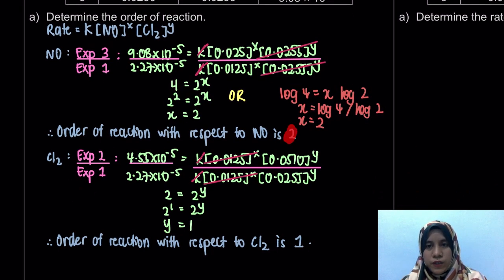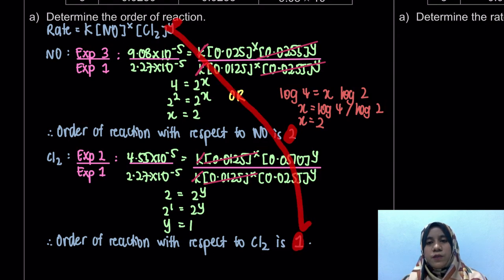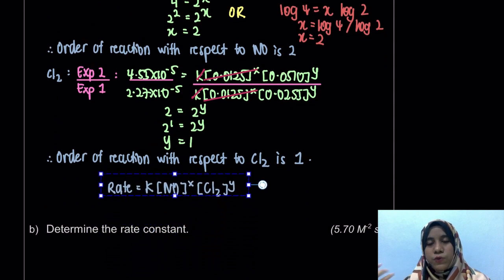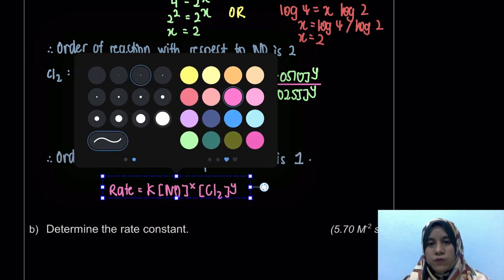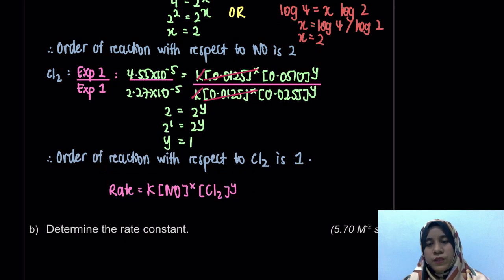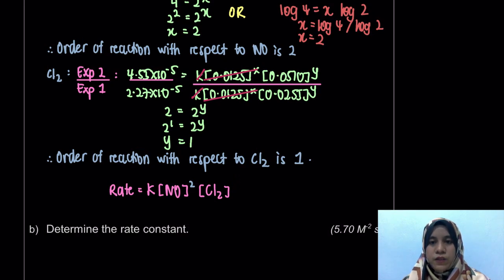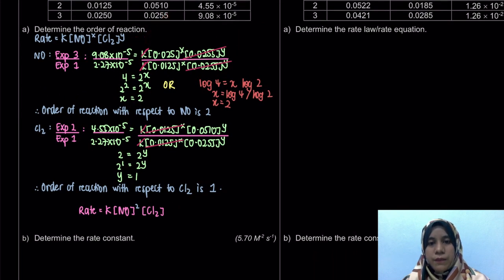Now the last step - we're going to substitute the order of reaction into our rate law. We had x and y as unknowns, and now we write: NO is to the power of 2, and Cl2 is to the power of 1. If you don't want to write the power of 1, that is fine. So that is the answer for question A.